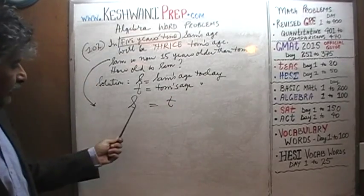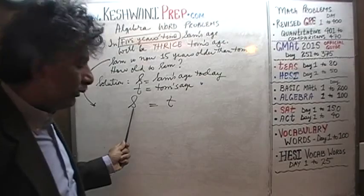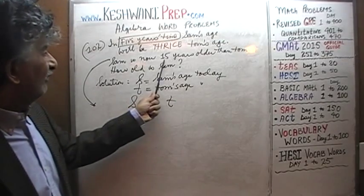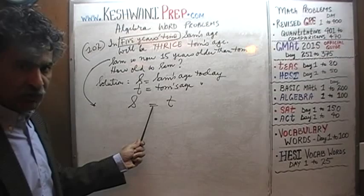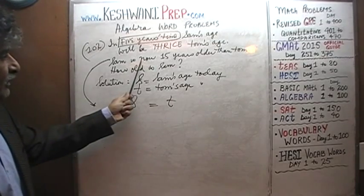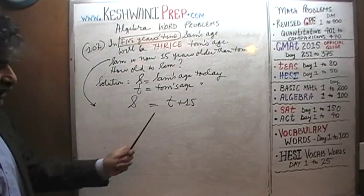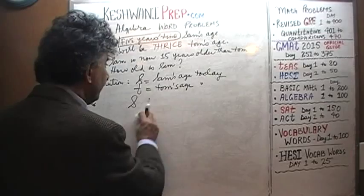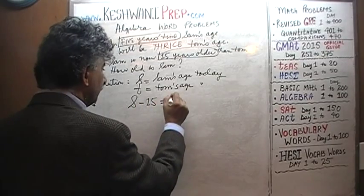Sam is s years old. Simply writing s = t is wrong — that says Sam is the same age as Tom, which is not true. Sam is 15 years older than Tom, so we need to add 15 to Tom's age to make it equal Sam's: s = t + 15. Equivalently, t = s minus 15. Either way is fine.